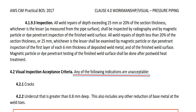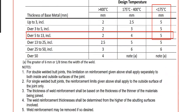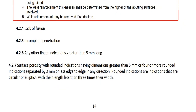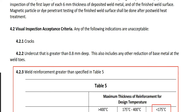Any of the following indications are unacceptable: 4.2.1, 4.2.2, 4.2.3, and others up to 4.2.7. Any of these indications, if they are found, they are rejected. So 4.2.1: Cracks. If you see cracks in the weldment, wherever in the base metal or heat-affected zone, that's a reject. No matter what. You don't need to think about this crack — it is reject.